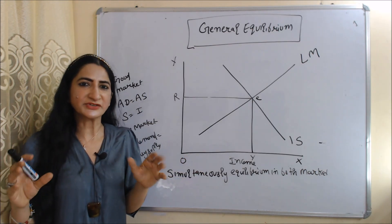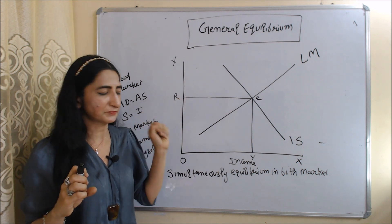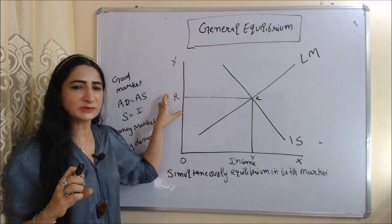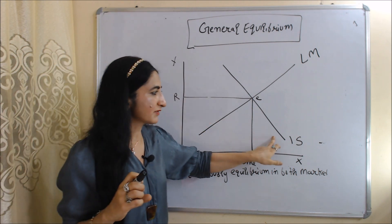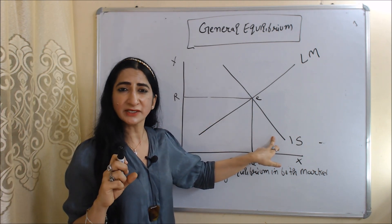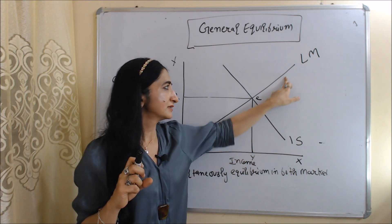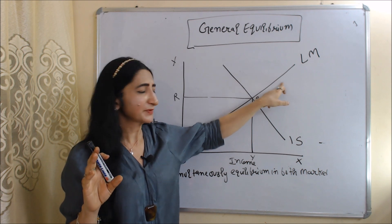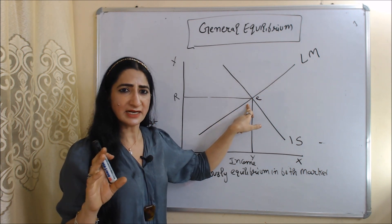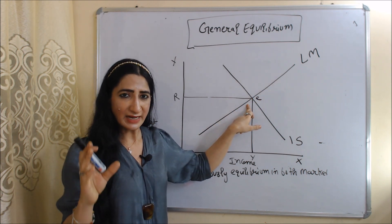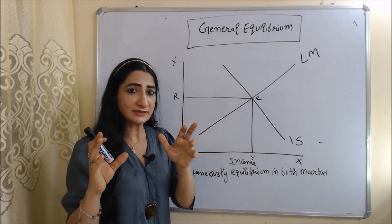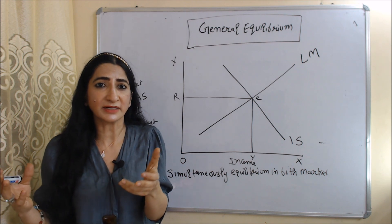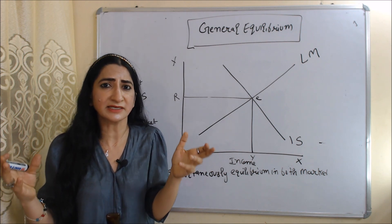Now we will discuss general equilibrium with the help of the IS and LM curves. In this diagram, the x-axis has income and the y-axis has interest rate. The IS curve represents equilibrium in the goods market, and the LM curve represents equilibrium in the money market. At point E, the IS and LM curves intersect each other. When IS and LM intersect, both markets — the goods market and the money market — are simultaneously in equilibrium.